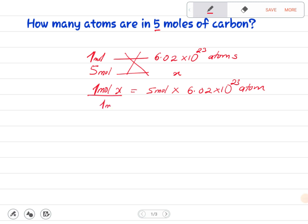Divide by one mole, and mole and mole cancel. This means x equals five times this number to give you 3.01 times 10 to the power 24 atoms, and that's how you answer.